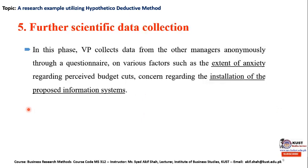The fifth step is further scientific data collection. The vice president collects data from other managers anonymously through a questionnaire. The variables measured include: the extent of anxiety regarding the perceived budget cut, and concern about the installation of the proposed management information system, which may take away managers' power, authority, and control over their departments.